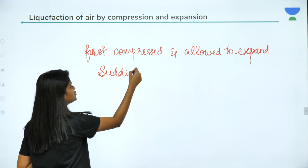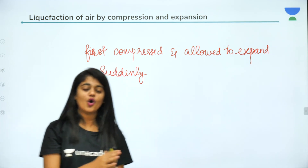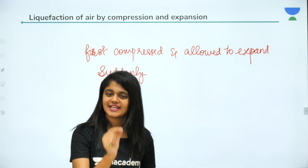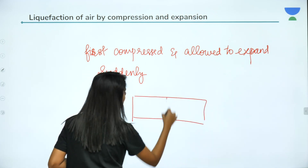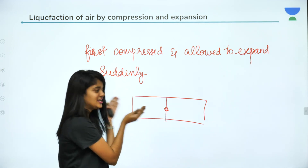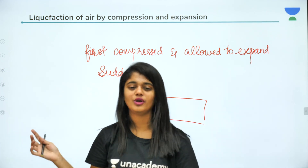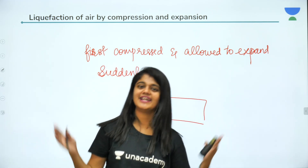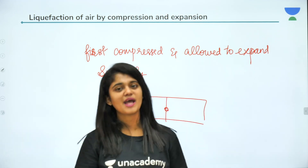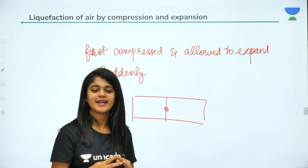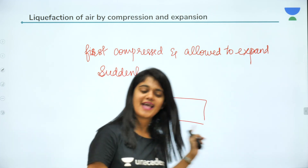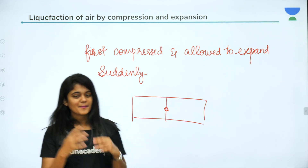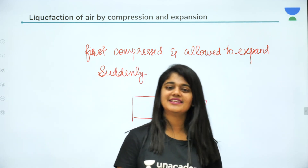When the compressed air is allowed to expand suddenly through a small hole, it moves from a high-pressure region to a low-pressure region — like two compartments connected by a small hole. As the compressed air moves through this hole it expands, causing a cooling effect. The temperature drops suddenly. We repeat this process again and again, and after sufficient temperature drop the gas gets liquefied.